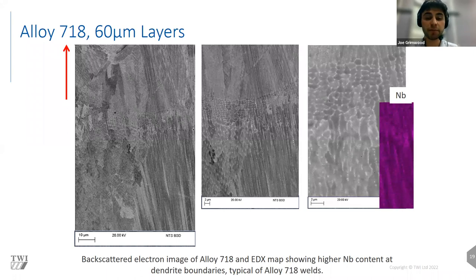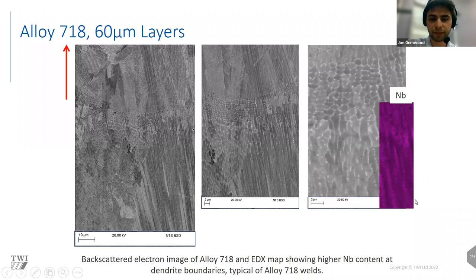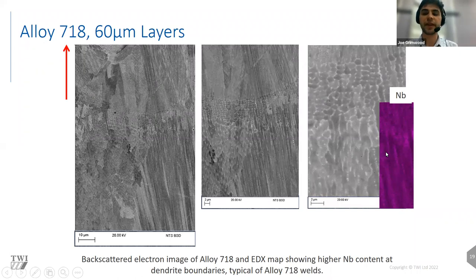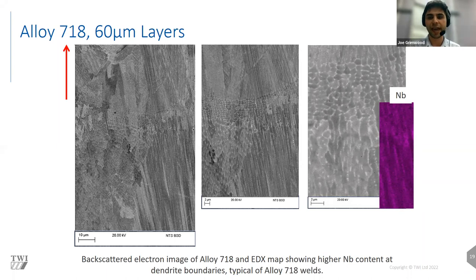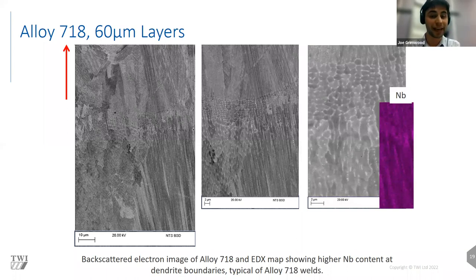Something else really important when thinking about solidification is segregation. There is niobium segregation at the interdendritic regions — niobium appears to be expelled during dendrite formation into the regions between each dendrite. This has quite a significant effect on phase formation later on and on other performance characteristics.